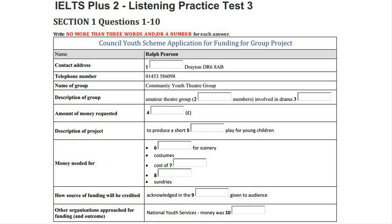Now in the next part of the form I have to give information about our group. Name of group — that's easy, we're the Community Youth Theatre Group. But then I have to describe it. What sort of information do you think they want? Well, they need to know we're amateurs, not professional actors, and how many members we've got. What's that at present? 18. And should we put in the age range? That's 13 to 22. No, I don't think we need to, but we'd better put a bit about what we actually do — something like members take part in drama activities and workshops. Right, that's all for that section.